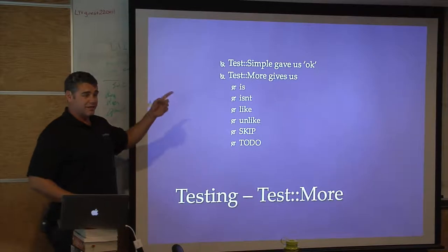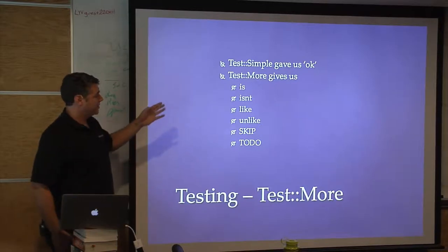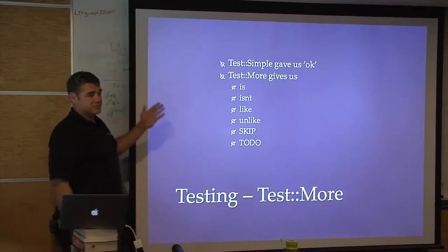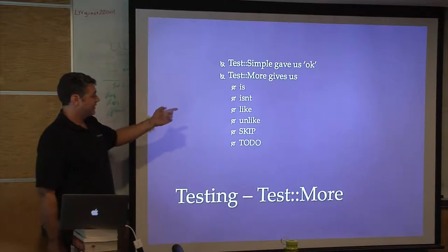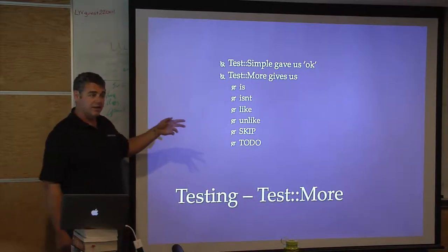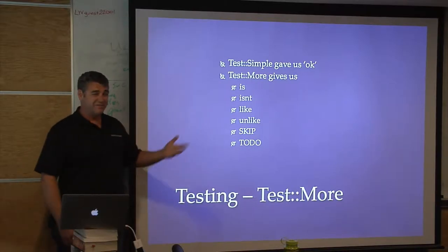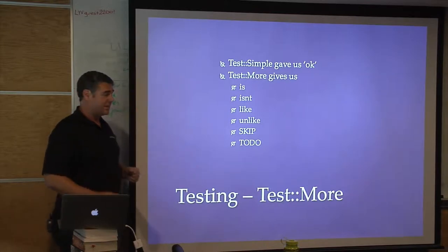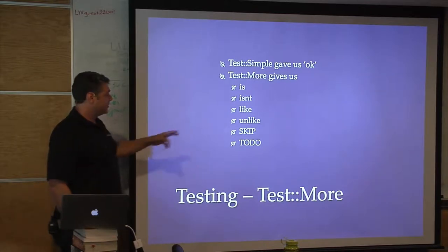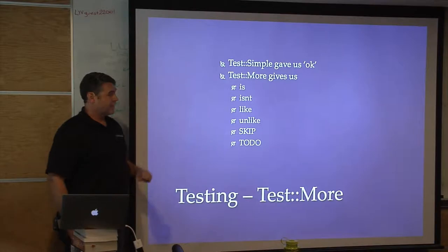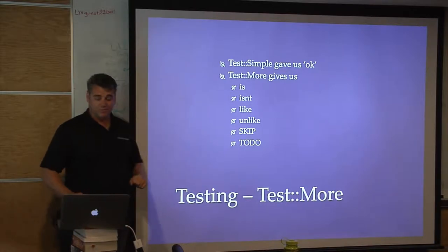Test::Simple gives us ok(). Test::More gives us lots more: ok(), is(), isn't(), like(), unlike() — I'll leave those for you to explore. The two I want to look at are skip and todo, which are actually very helpful.